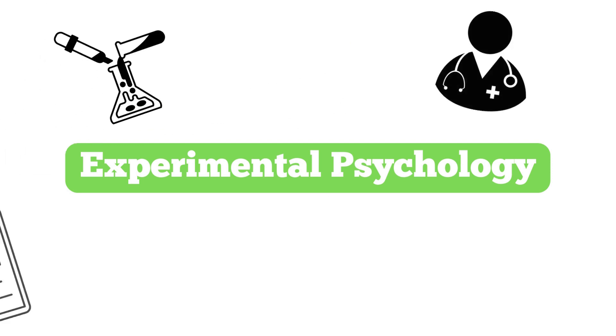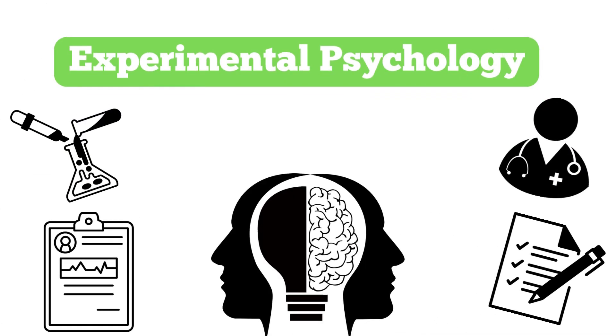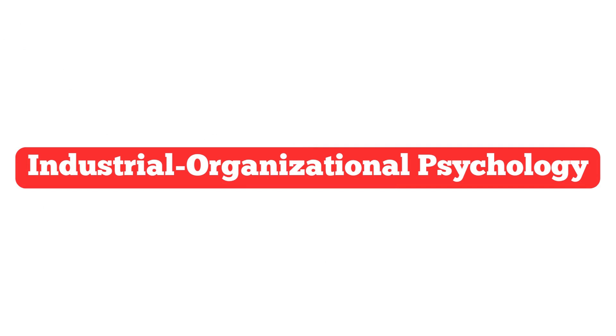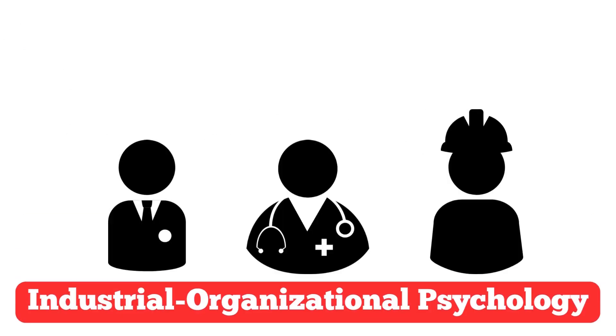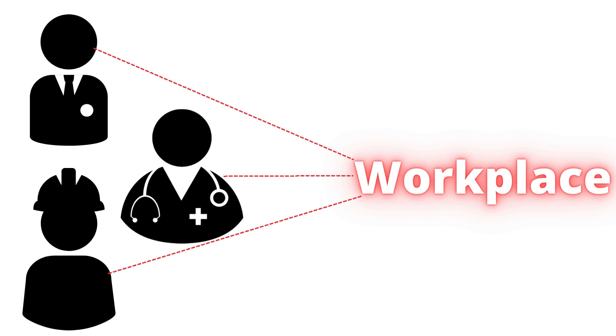Experimental psychology is a focus area in which we conduct experiments in order to better understand the mind. Industrial-organizational psychology focuses on people in the workplace and is used to improve the relationship between the two to make employees and employers much better.